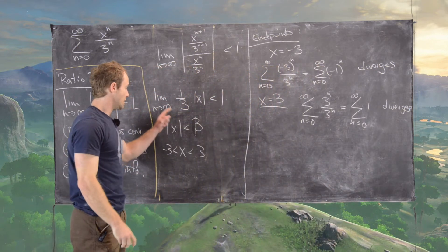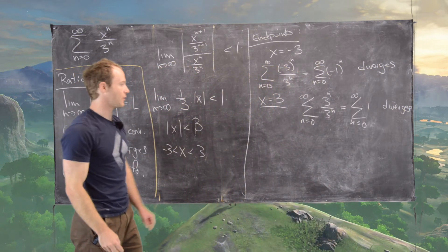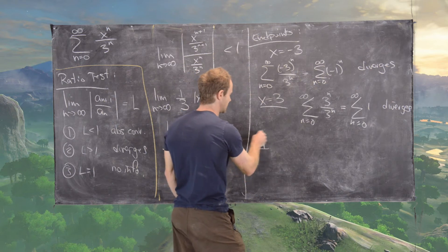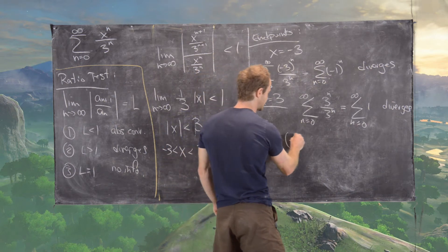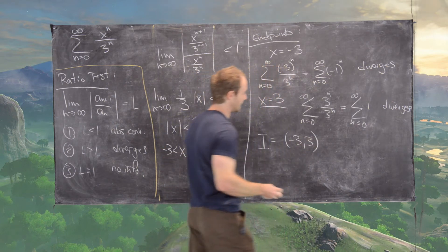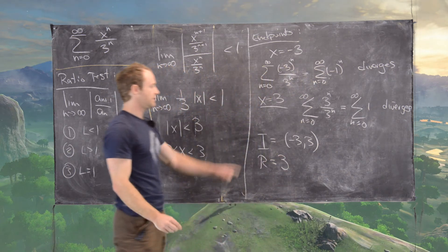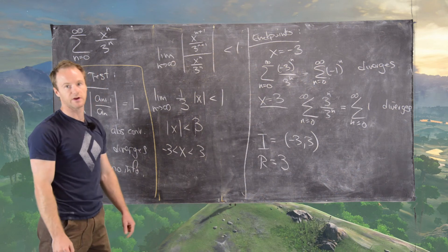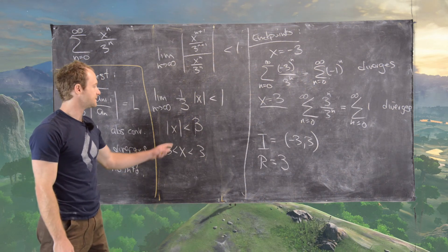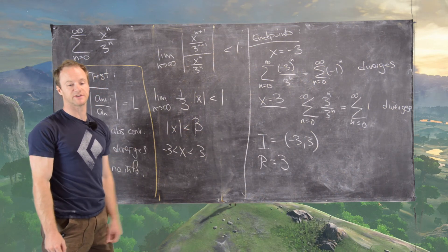Which means we can't keep any of the end points, and that means our interval of convergence is in fact negative 3 to 3, not including the end points. And our radius of convergence is 3, because each of those end points are 3 units from the center point. Okay, good. So we're done with this example.